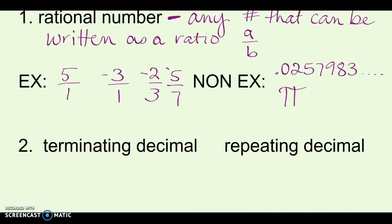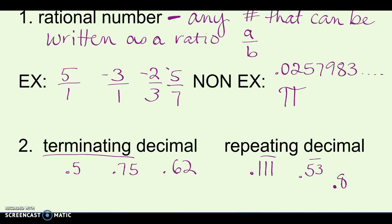There are two types of decimals in this section. The first is terminating decimals — if something terminates, it ends. Decimals like .5, .75, .62 are terminating; they just stop with no more digits. Repeating decimals have patterns: .111 repeating, .53 repeating — so .535353... — anything with a pattern that keeps going. Sometimes you'll see .83 where just the 3 keeps repeating. Both types are examples of rational numbers.